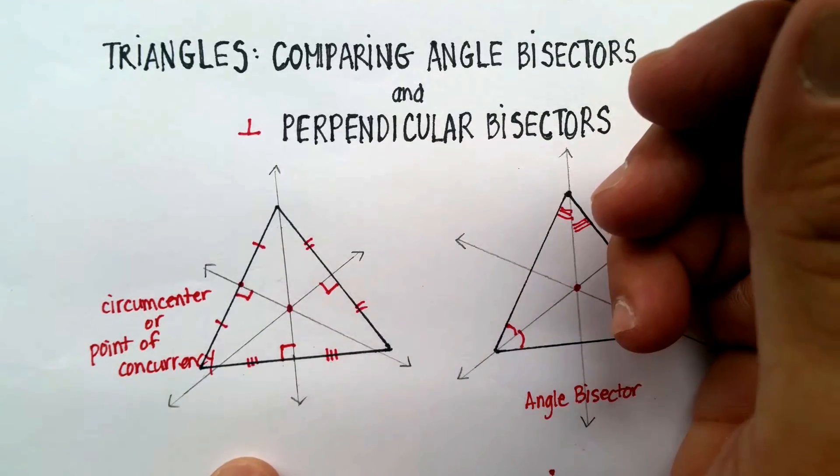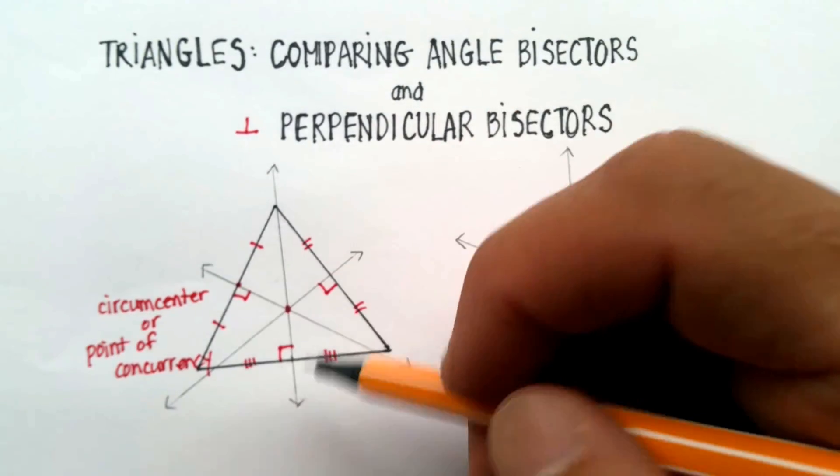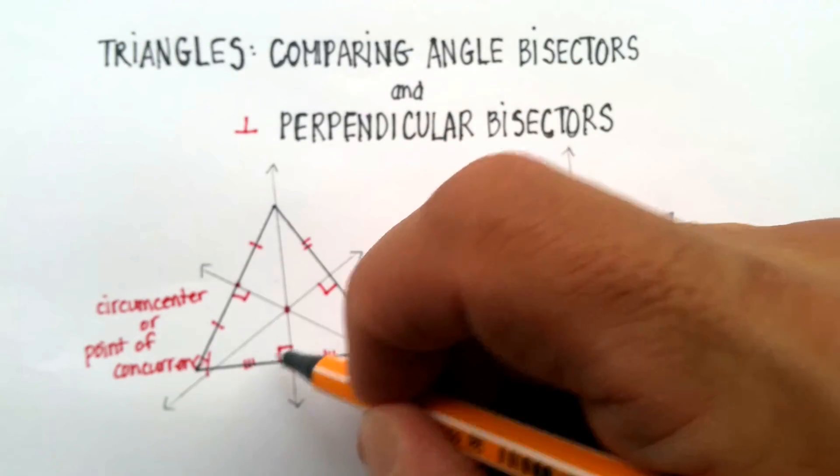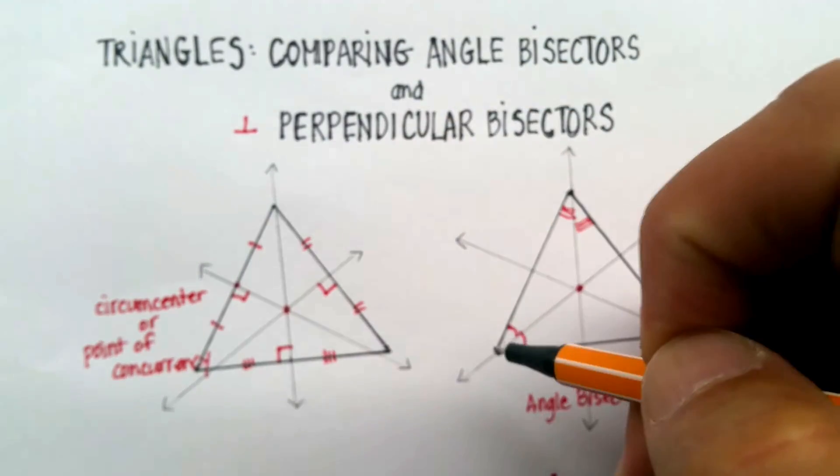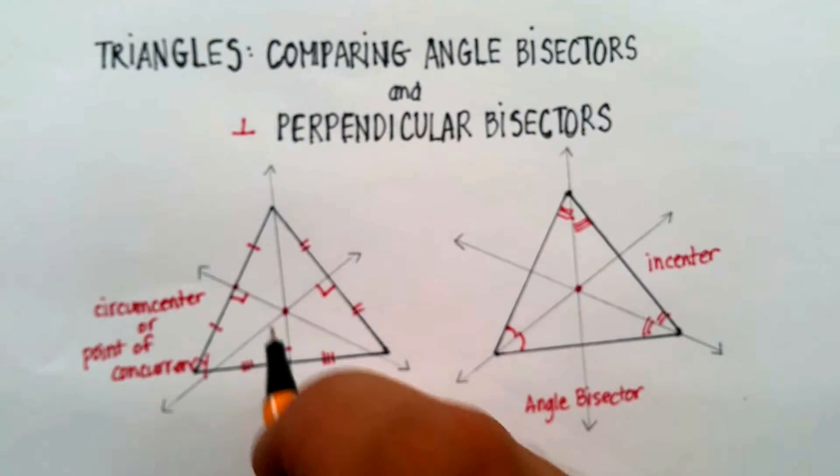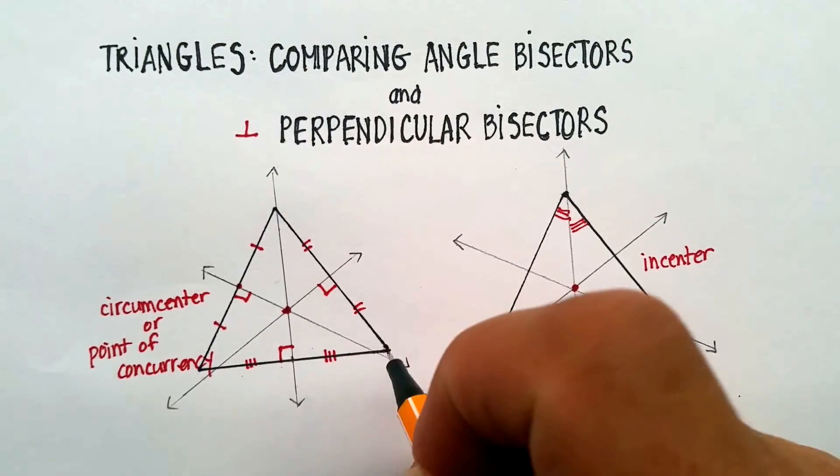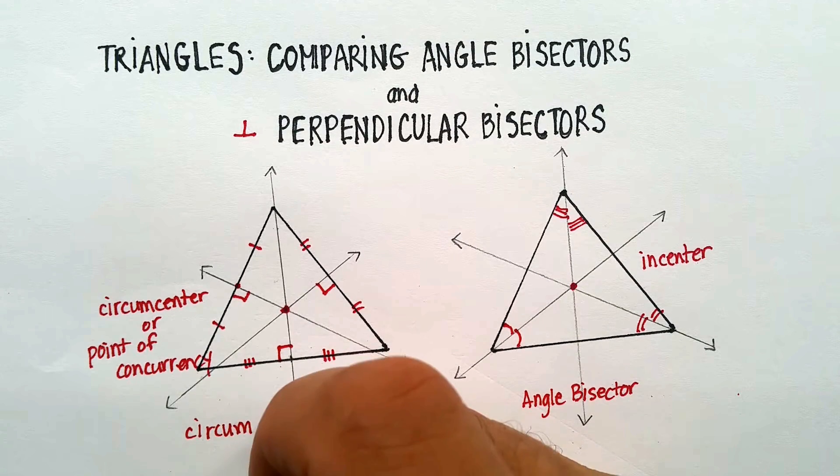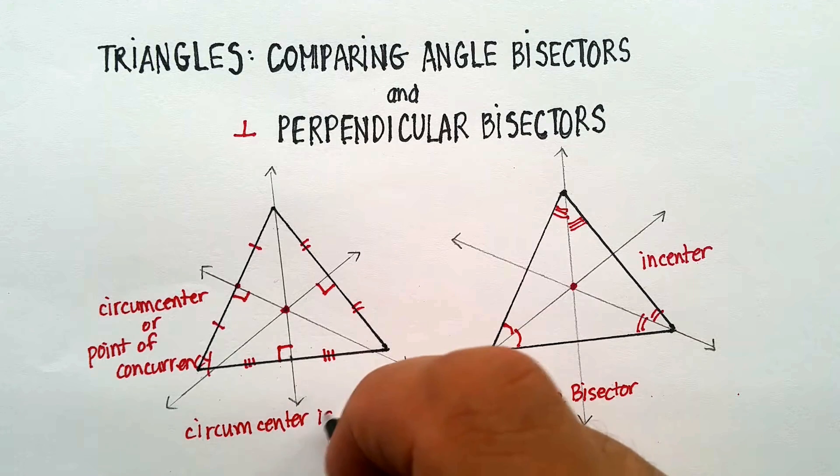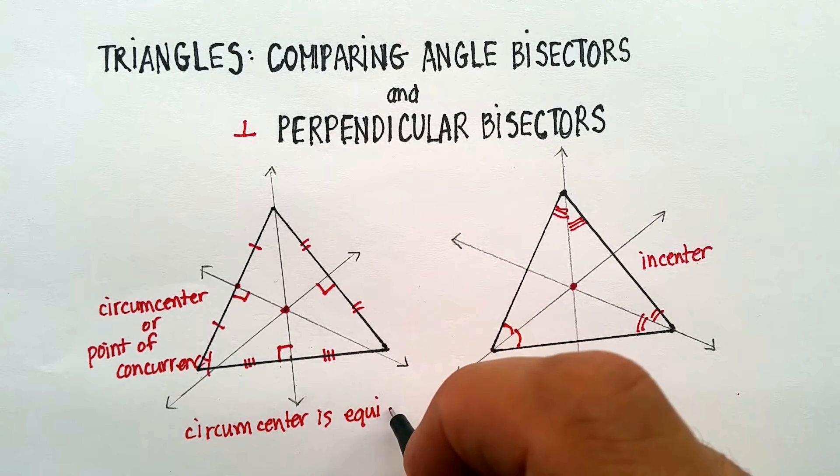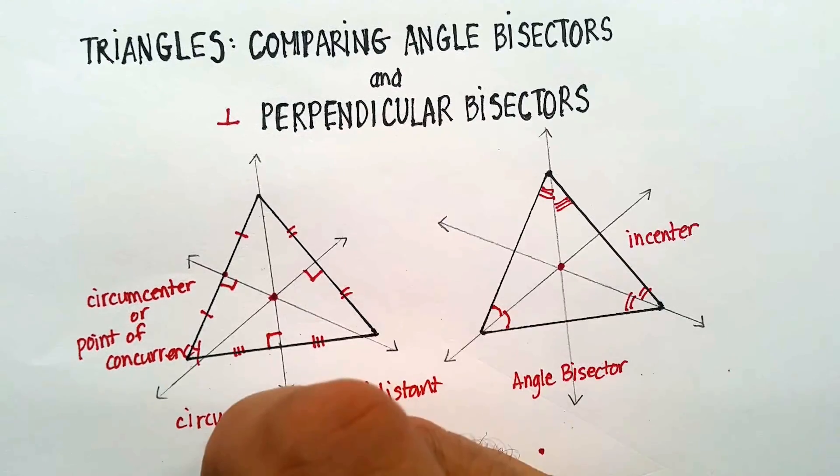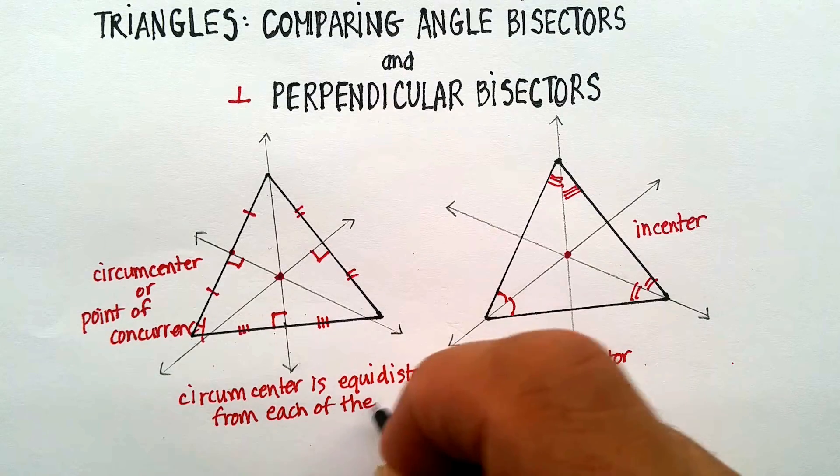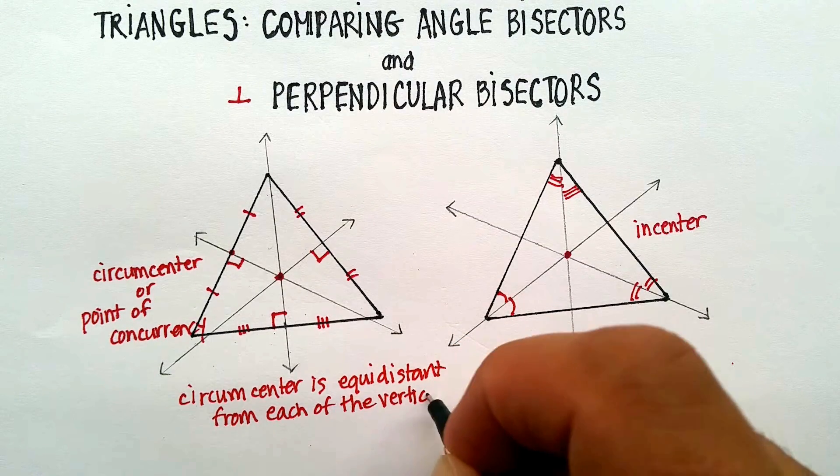Now, notice what I said. The perpendicular bisector cuts the side into two equal halves, forms a perpendicular angle with the side. And the other last characteristic here is that this point is equidistant from each of the vertices. So, the circumcenter is equidistant from each of the vertices of the triangle.